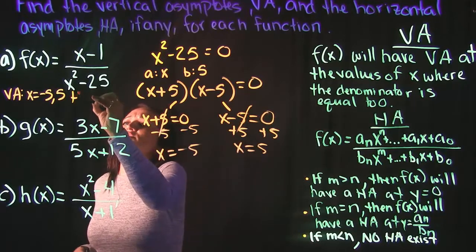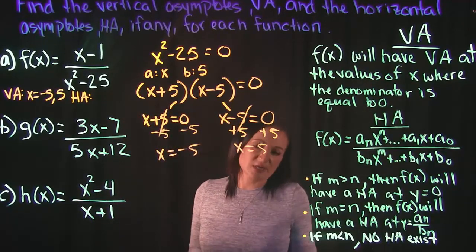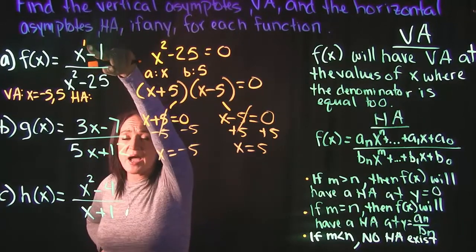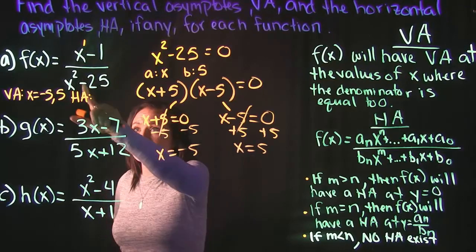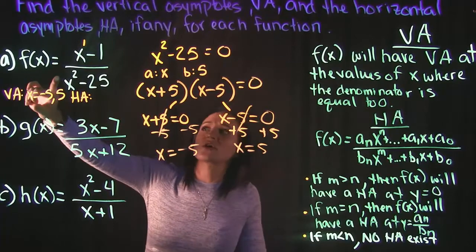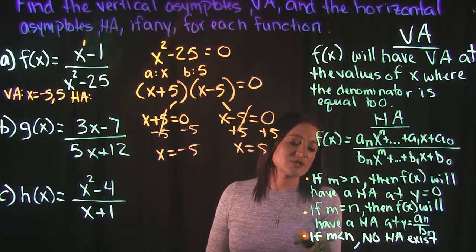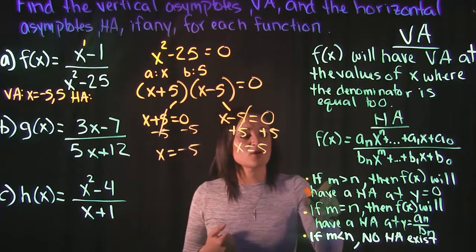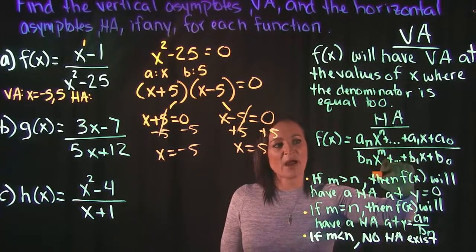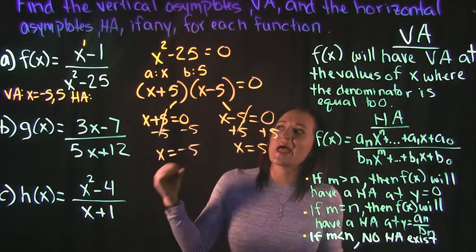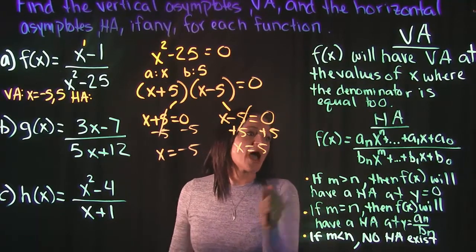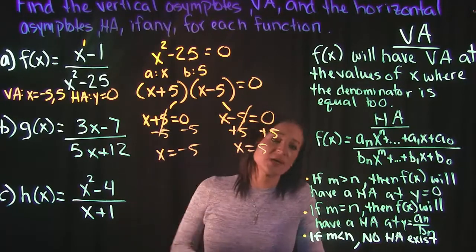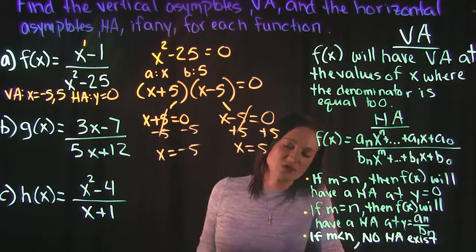For the horizontal asymptote of example A, we compare degrees. The degree of the numerator is 1, and the degree of the denominator is 2 because of x squared. The denominator's degree is greater, so m is greater than n. That's the first rule, which tells us there is a horizontal asymptote at y = 0.